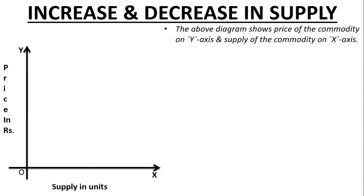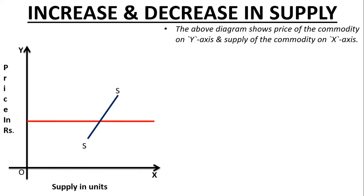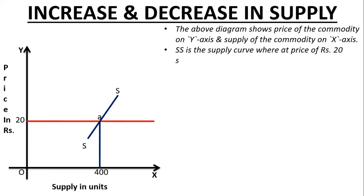Now let us see — I am drawing one more curve and its name is SS. SS will be the supply curve. At the price of rupees 20, 400 units are supplied, and the equilibrium will be at point A. SS is the supply curve where at the price of rupees 20, 400 units are supplied — this is shown at point A on the supply curve.